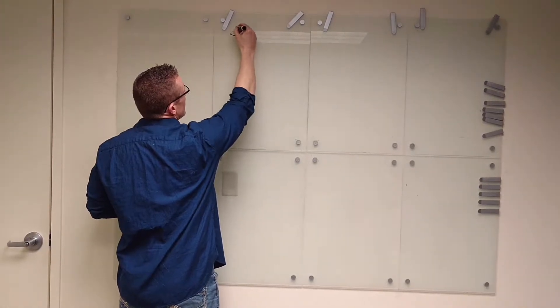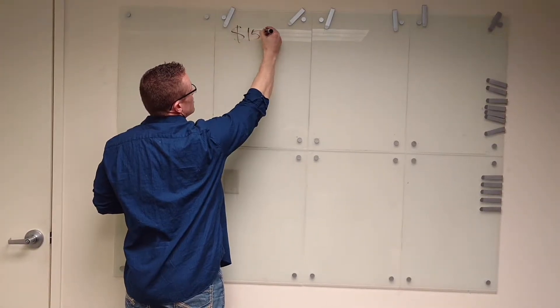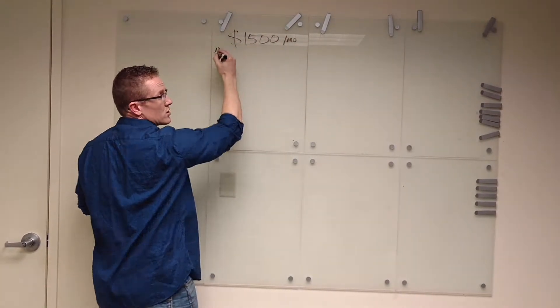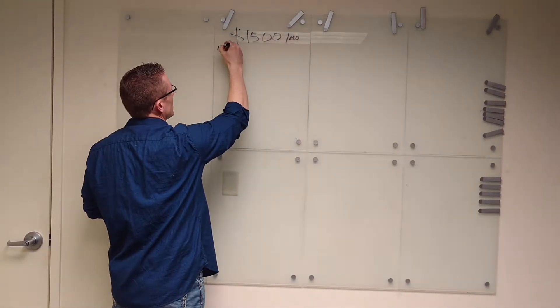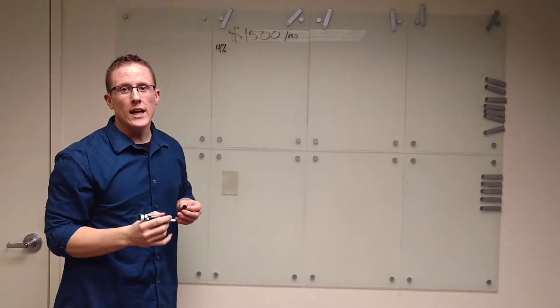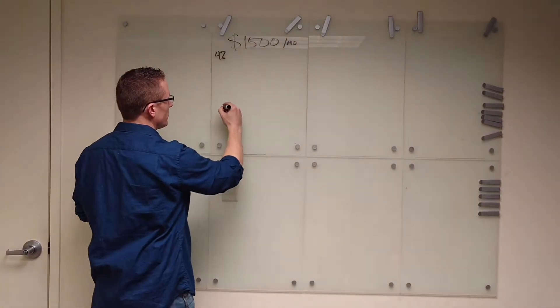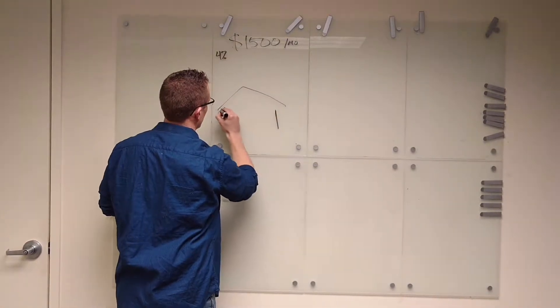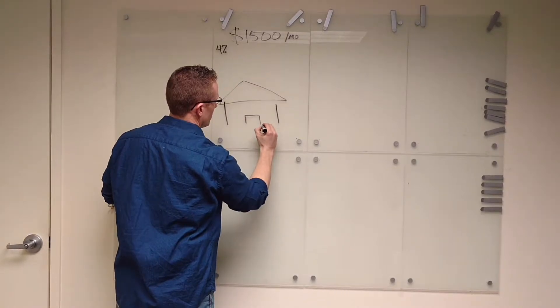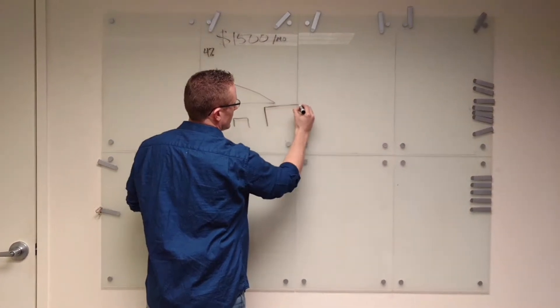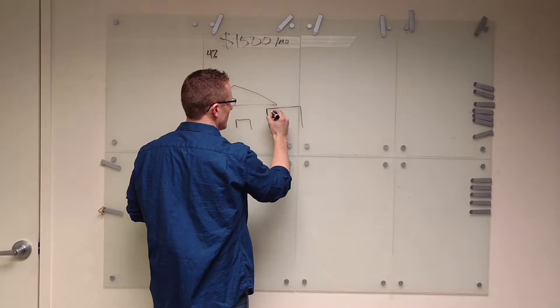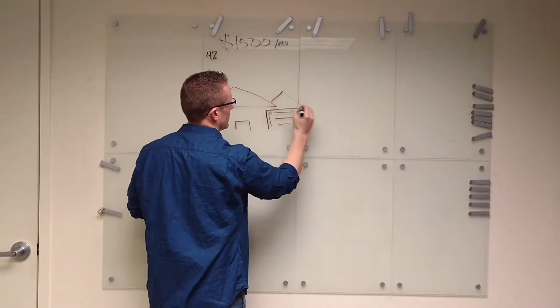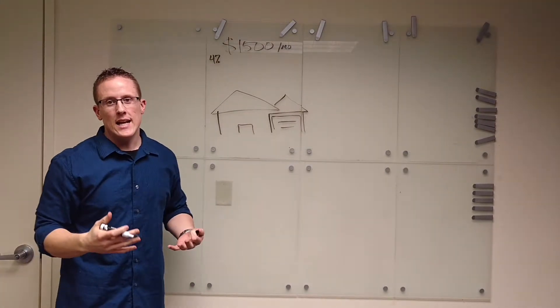And right now, today, you can afford a $1,500 a month monthly payment. And let's say your interest rate is about 4%, give or take. What you're looking at today as far as the home that you can afford is probably a pretty nice home, pretty good size. And let's say you're like me, you appreciate a good garage. That's what you're looking at today.